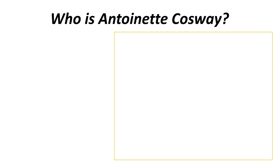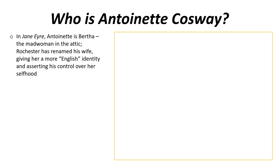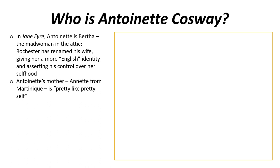The first question we might want to ask is: who is Antoinette Cosway in the novel? In Jane Eyre, Antoinette is known as Bertha — she's a madwoman in the attic, and Rochester in that novel has renamed his wife, giving her a more English identity and asserting his control over her selfhood. If you don't know much about Jane Eyre, look at the previous video, which explains the connection between the two novels. In Wide Sargasso Sea she's known as Antoinette, which is a much more French-sounding name that she prefers to be called by, until Rochester starts calling her Bertha about halfway through the novel.